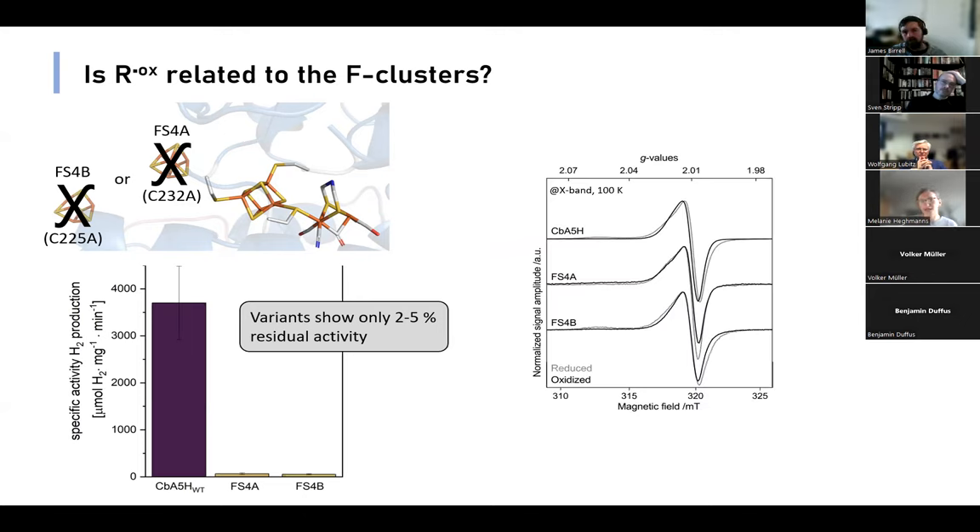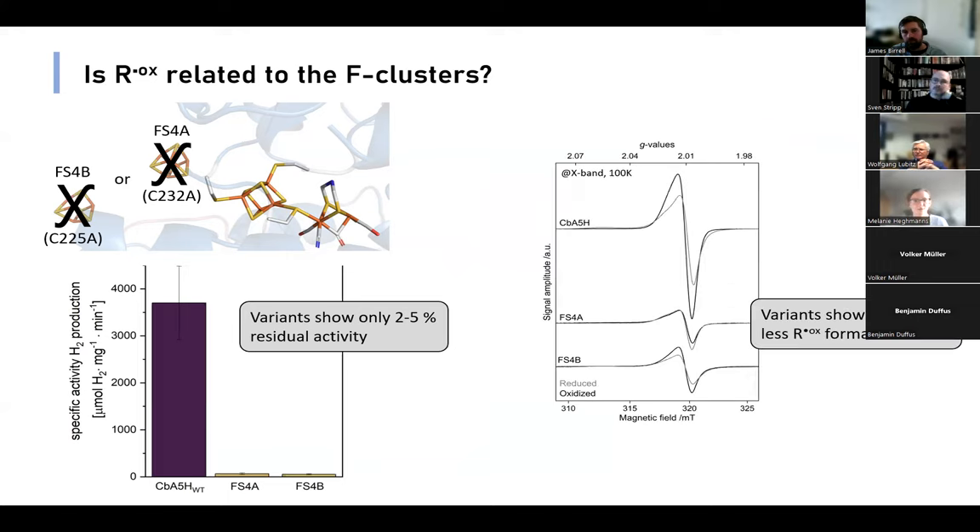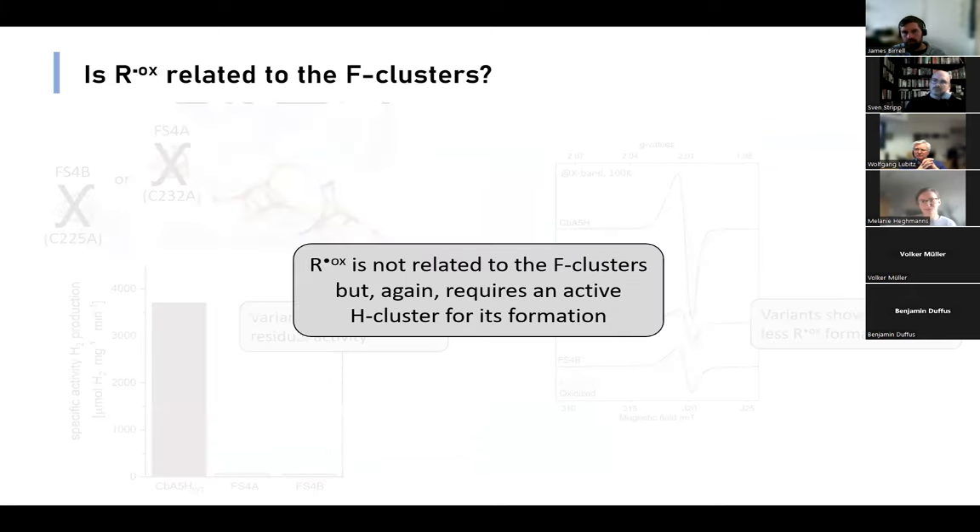However, when we look at the X-band spectra at 100 Kelvin, all the variants as well as the wild type show R^ox in the reduced and oxidized state. When we look at the relative intensities, the variants show approximately 80 percent less R^ox formation, but this is in agreement with the residual activity. This shows us that R^ox is not related to the F-clusters because otherwise we wouldn't expect to see any signal. But again, requires an active H-cluster for its formation.